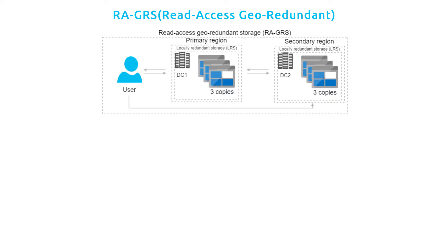The next one is Read Access Geo-Redundant Storage. This type of redundancy is designed for high availability applications. RA-GRS has the same redundancy as GRS — your data is replicated asynchronously across two regions — but with read access. The three copies in the secondary region are enabled for read-only access to the data, even when the primary region is available.